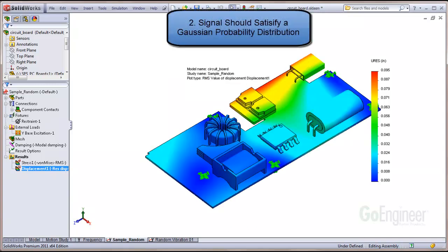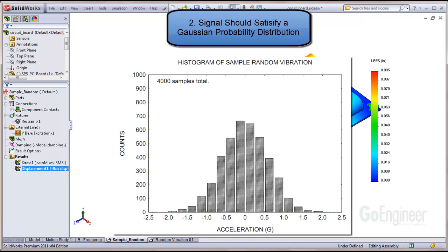It satisfies a Gaussian probability distribution. When you plot a histogram of the signal, you should see something like this, a bell curve. From the highlighted area, you can see the signal likes to remain near zero most of the time. This is representative of a Gaussian probability distribution.